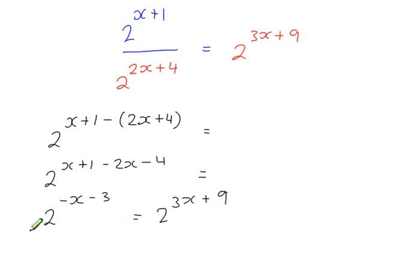Now, because we have single terms on each side, the base on each side is exactly the same, which means these indices must also be equal. So I can say that minus x minus 3, so the power here, should be the same as the 3x plus 9 here.